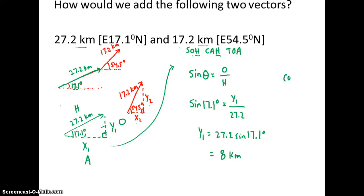Let me try cosine. Cosine of the angle is my adjacent over hypotenuse. So cos of 17.1 degrees is my adjacent. Adjacent's x1. My hypotenuse is still 27.2.